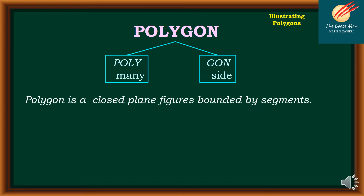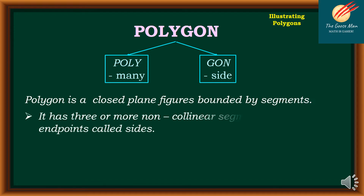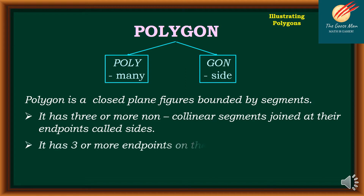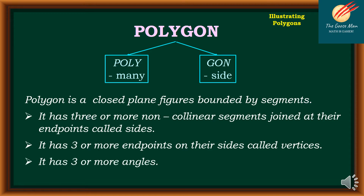Aside from that, a polygon is a closed plane figure bounded by segments. It has three or more non-collinear segments joined at their endpoints called sides, three or more endpoints on their sides called vertices, and three or more angles.